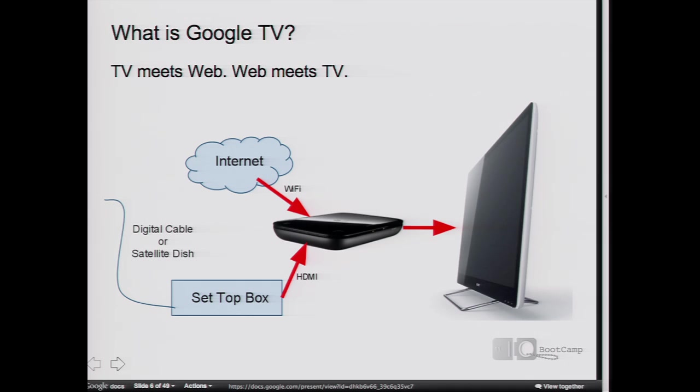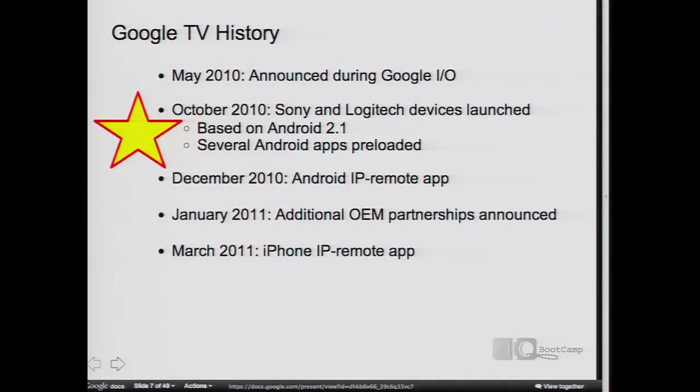Today already, on your web browser you can go to TV-optimized websites, or you can run some of the preinstalled Android applications. If you already have Google TV, you can run the Pandora app, the Netflix app, stream movies — and it brings it all to the largest display in your house, the TV. Let's take a quick look at the history of Google TV to help understand where it is today.